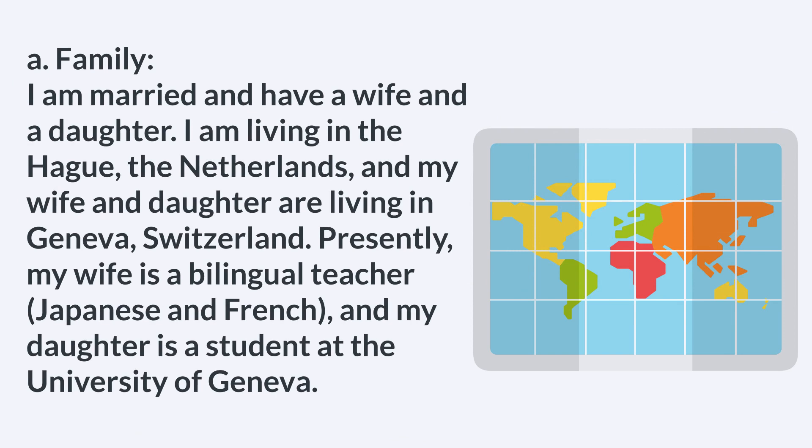A. Family. I am married and have a wife and a daughter. I am living in The Hague, the Netherlands, and my wife and daughter are living in Geneva, Switzerland. Presently, my wife is a bilingual teacher — Japanese and French — and my daughter is a student at the University of Geneva.